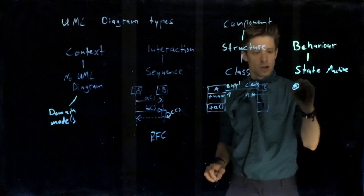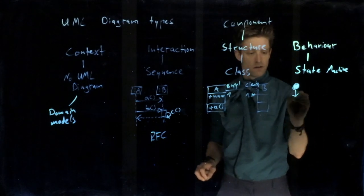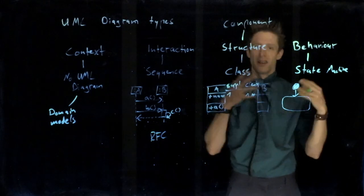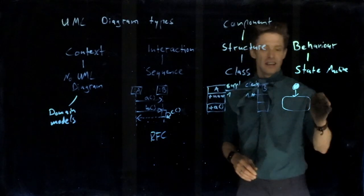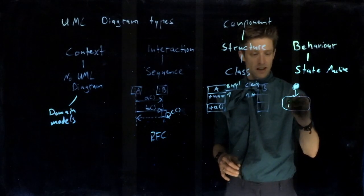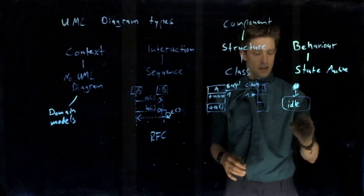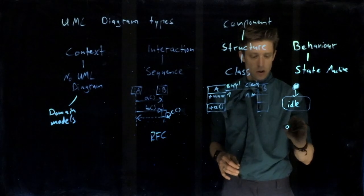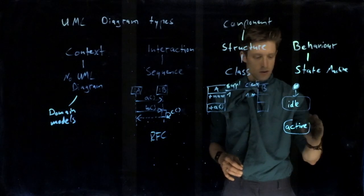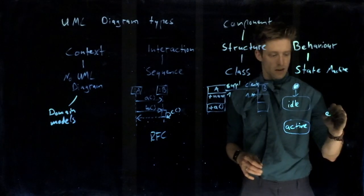We have states, for example, state idle, and active, and error. This would describe a system that is maybe a very basic model for a lot of devices like embedded devices that are either idle or they do something when they get activated.